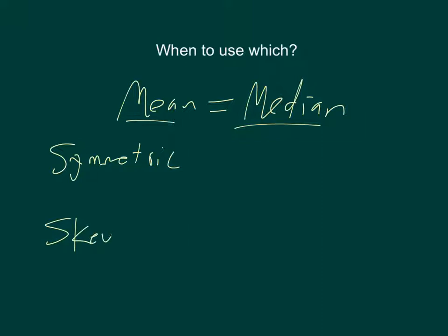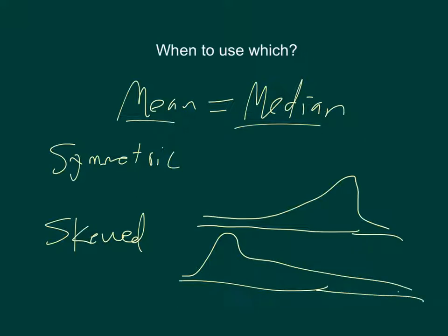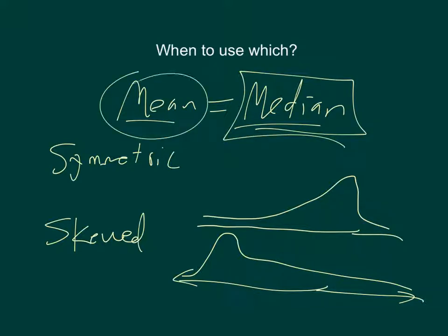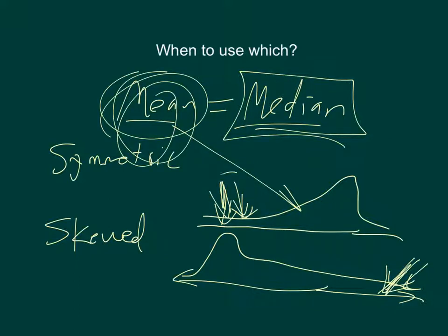If the data is skewed, remember what that is? So if I have a distribution that looks like this, that would be considered left skewed. Or if I have a distribution that's right skewed, something like that, crazy looking thing. In those cases, I use the median. And the reason why is the mean got skewed by these large values up here, or small values there, or here, large values. All right. So the mean is less, it's just not as good.